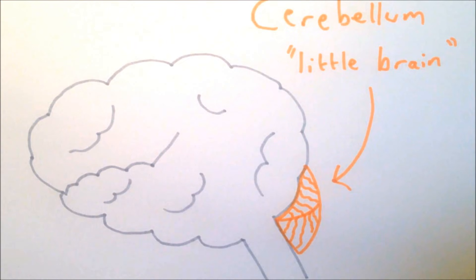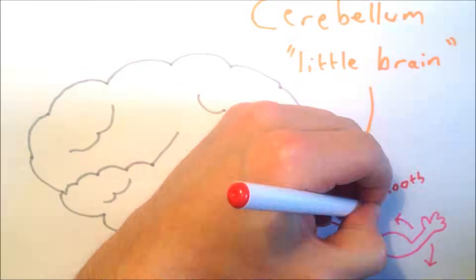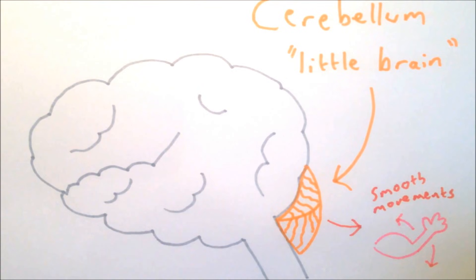It contains over 50% of all the neurons in the brain and serves to coordinate other areas of the brain involved with movement, allowing them to work together to perform smooth, precise movements.